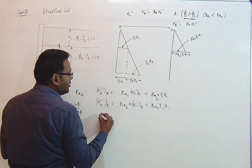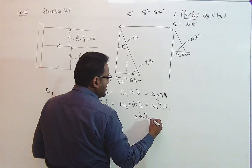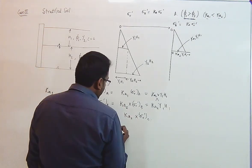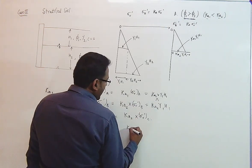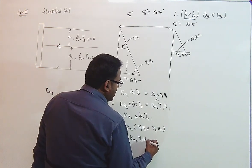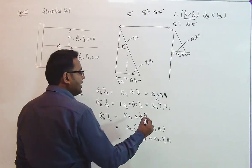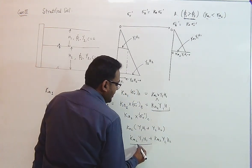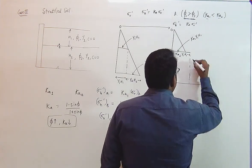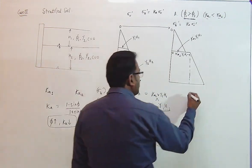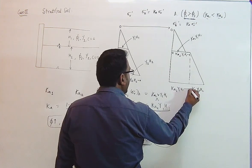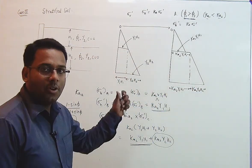For the horizontal stress at point C (in soil 2), we multiply sigma_v' at C by Ka2. The effective vertical stress at C is gamma1·h1 + gamma2·h2, so the stress becomes Ka2·(gamma1·h1 + gamma2·h2), which can be written as Ka2·gamma1·h1 + Ka2·gamma2·h2. The first term is the constant base value from the jump at B, and the increase due to the second soil is Ka2·gamma2·h2. This gives the complete earth pressure diagram for the case phi1 > phi2.